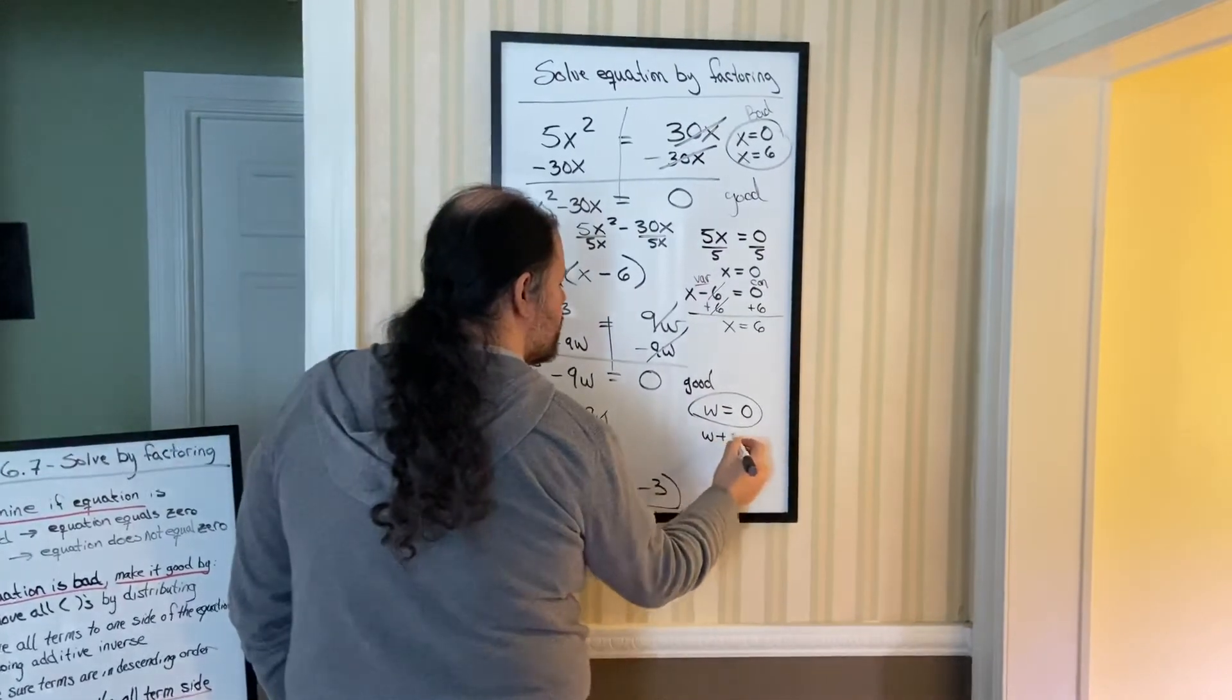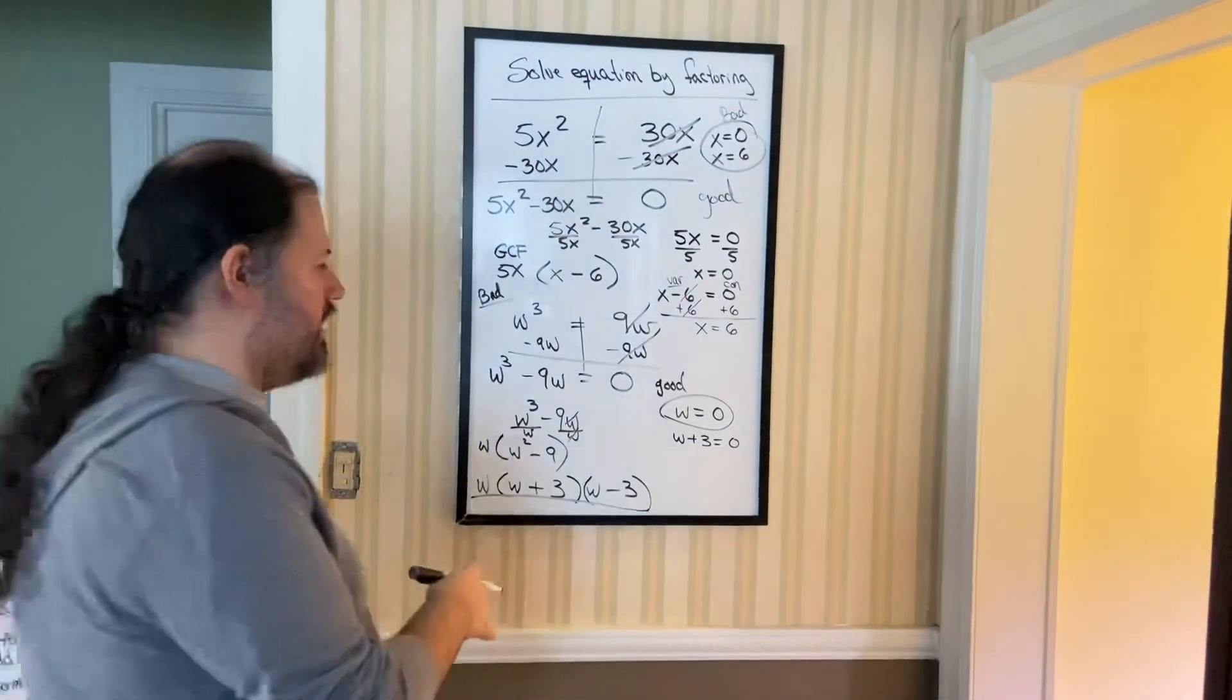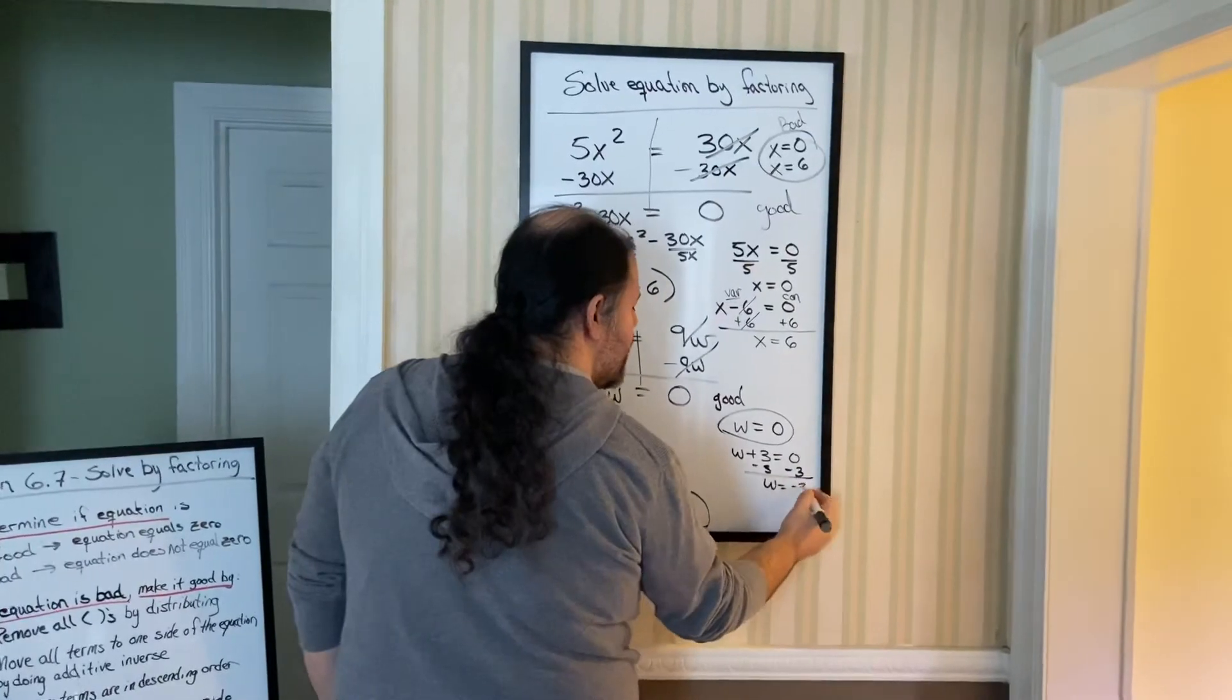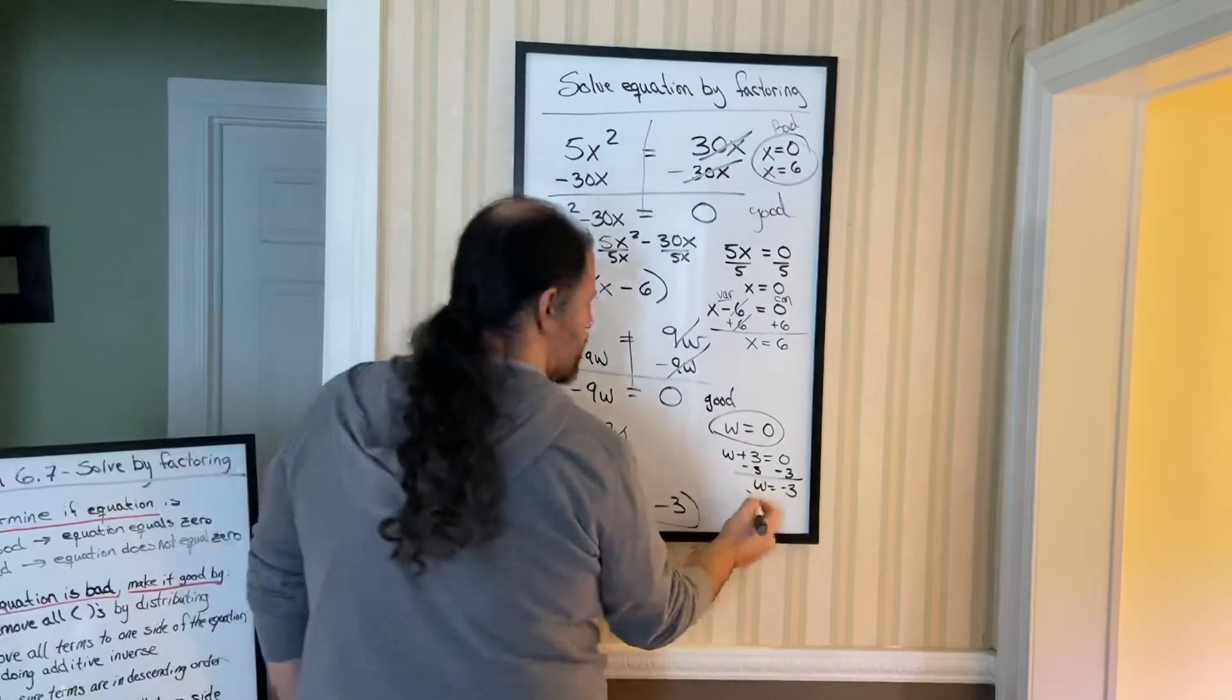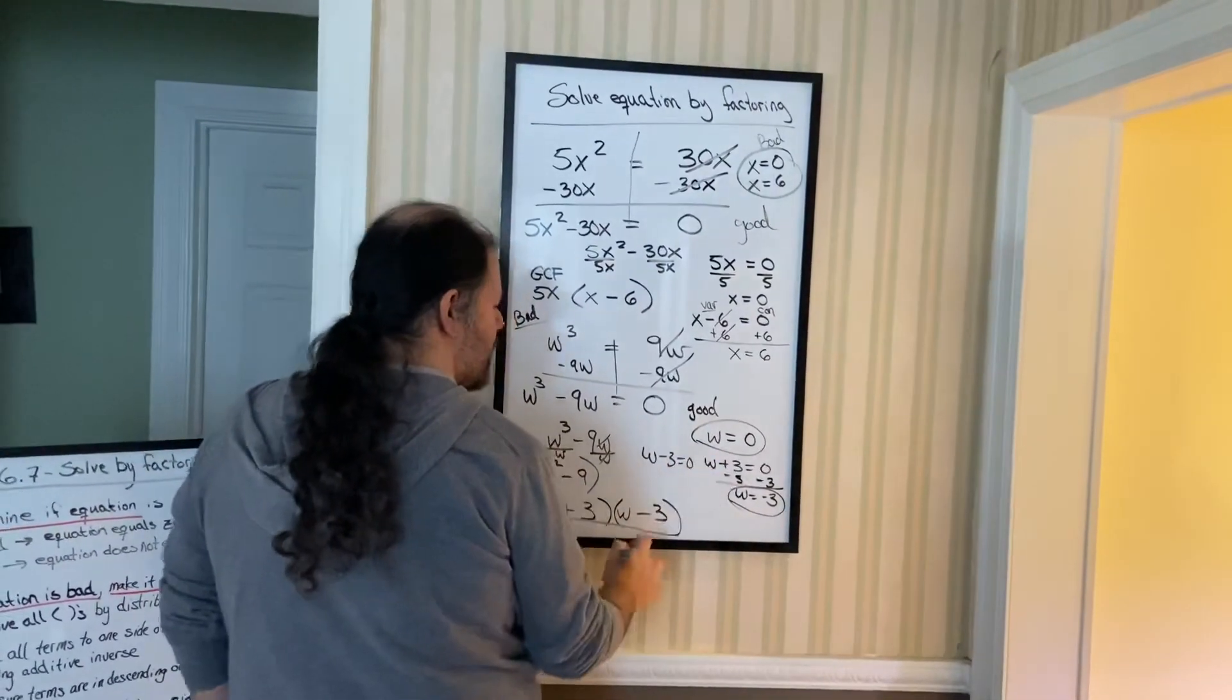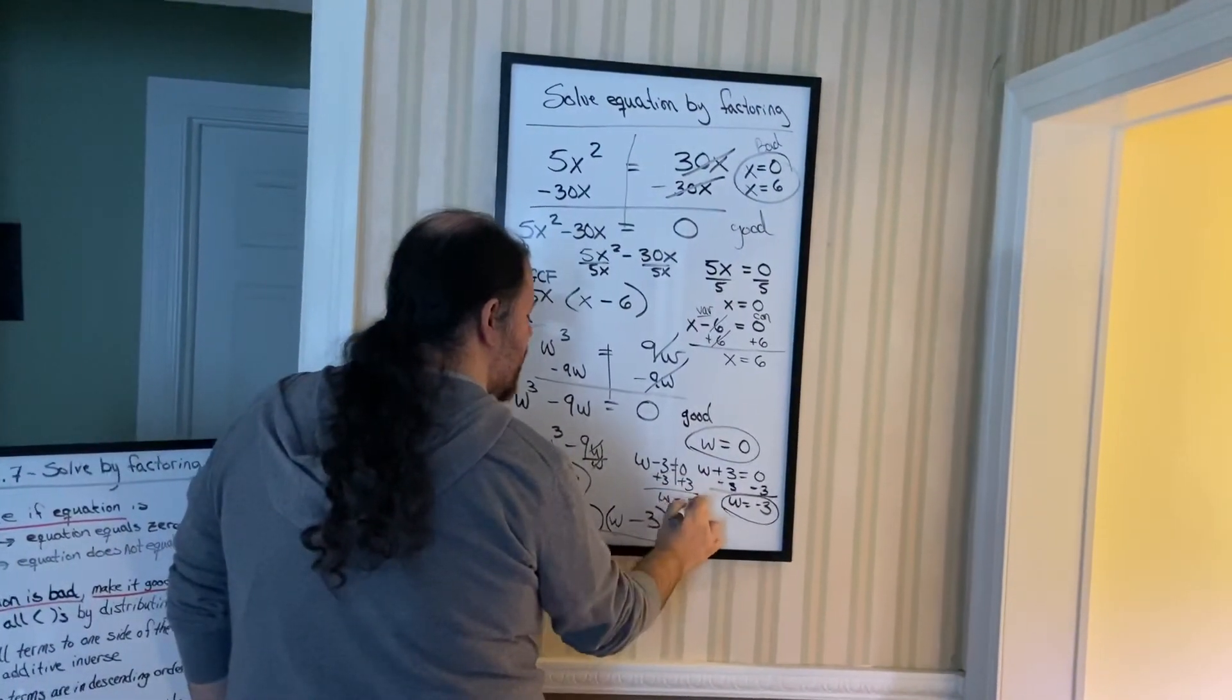Take W plus three. Set that equal to zero. Remember, we want to get the variable by itself. So don't keep it at W plus three. Remember, we'll have to move the three over to get W by itself. So we'll get W equals negative three. And then that would be your second answer. And then take this other binomial, W minus three, set it equal to zero. And then you know you're going to move the three over by doing additive inverse. So we get W equals positive three.